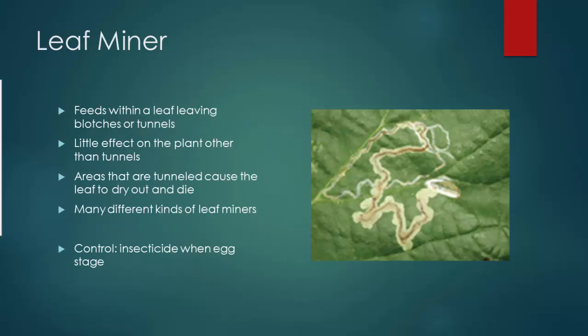Next up you have a leaf miner. As a larva, they mine through the leaves, making little zigzag patterns because they are eating away at the inside of the leaf, making little tunnels. They can cause the leaf to dry out and die because they are eating the inside of the leaf from the inside out. There are a lot of different kinds, and it's important to control them when they're young — a foliar insecticide will work really well with leaf miners.